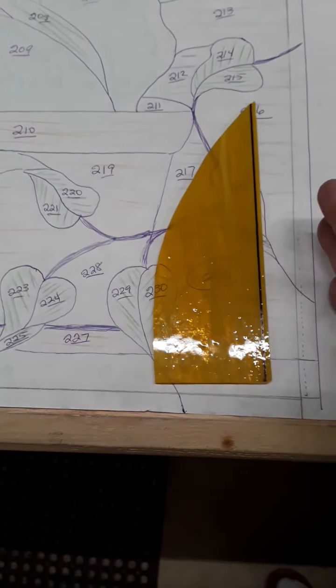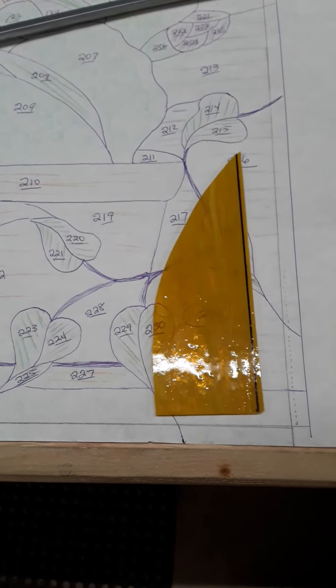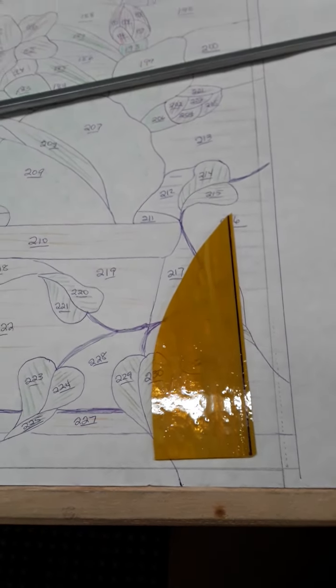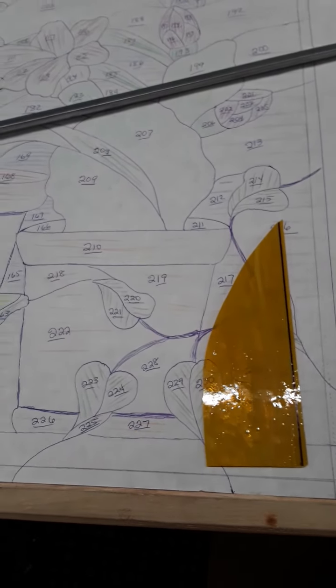Do not allow your glass to grow any farther than your line because you don't want it to be an eighth of an inch or even a sixteenth of an inch too big. It's better to be a little bit too small than too big.